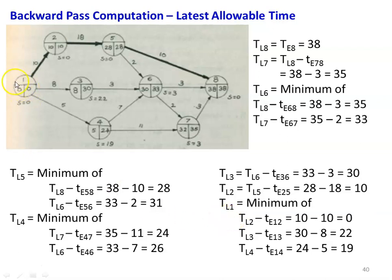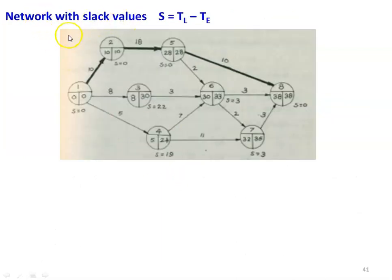For TL4: two outgoing arrows — minimum of (TL7 minus t(4,7) equals 35 minus 11 equals 24) and (TL6 minus t(4,6) equals 33 minus 7 equals 26). The minimum value is 24, so TL4 equals 24. For TL1: three outgoing arrows — minimum of (TL2 minus t(1,2) equals 10 minus 10 equals 0), (TL3 minus t(1,3) equals 30 minus 8 equals 22), and (TL4 minus t(1,4) equals 24 minus 5 equals 19). The minimum value is 0, so 0 is written here. All TE and TL values for all events are now calculated and written at the bottom of the circle. The slack is 0 for event 8: 38 minus 38 equals 0.